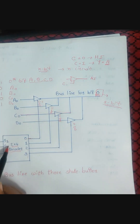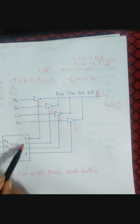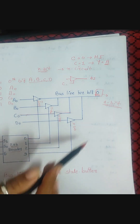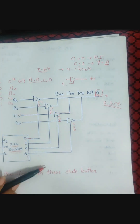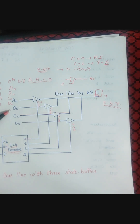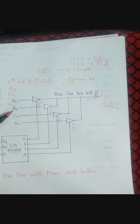If you have eight registers and need to transfer via a bus system, you cannot use the 2×4 decoder — you would need to use a 3×8 decoder instead. So this is about the common bus system using a tri-state buffer. Thank you very much.